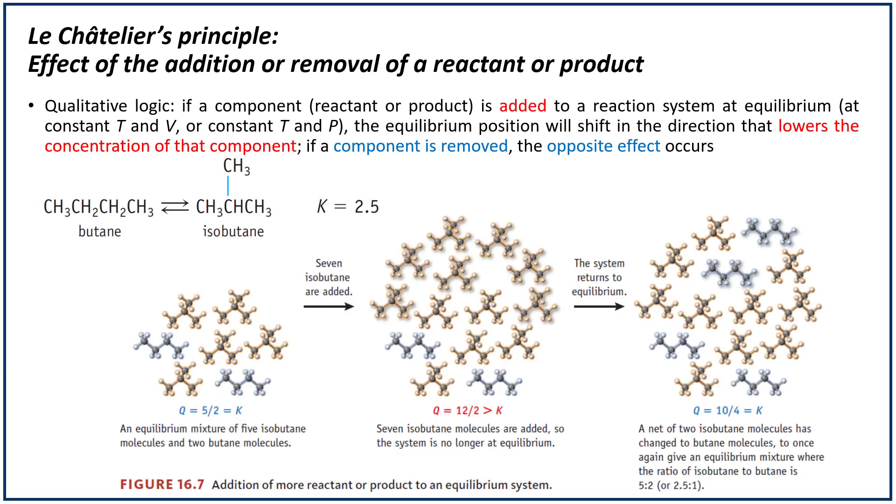According to Le Chatelier's principle, if you add a reactant, the system in equilibrium should shift towards the right to get rid of the extra reactant. So that means that if you add products to a system in equilibrium, the reaction should shift to the left to get rid of the extra products.